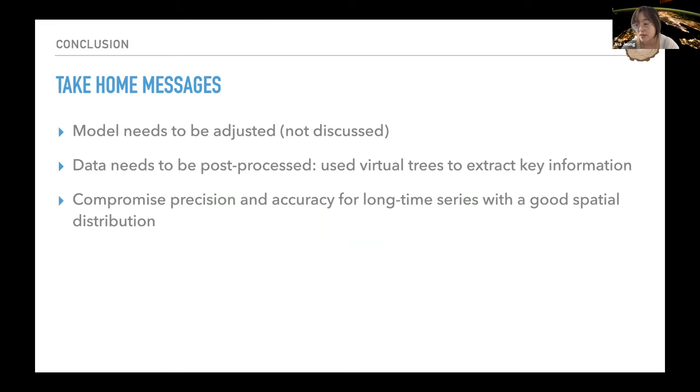Here are some take-home messages. We know there is noise in the ITRDB, but we also know there is information in it, and it has advantages in spatial and temporal depth. We could compromise data and model by restricting the information we feel confident. What we suggest is that ITRDB data may not be able to be used for decimal precise tuning, but it can be used as a first approximation to benchmark the tree growth in land surface model. Model needs to be adjusted, which is not discussed. Data needs to be post-processed, so we use virtual trees to extract information, and we could compromise precision and accuracy for a long time series with a good spatial distribution.